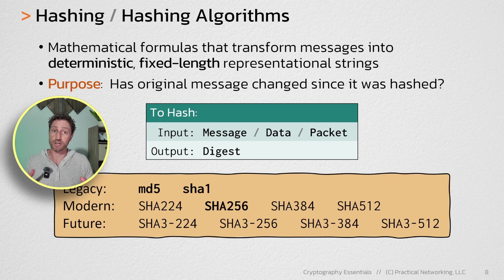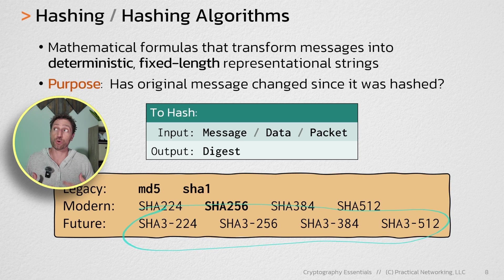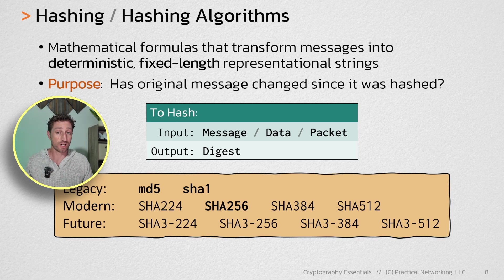And since that creation and approval process happened in public, the SHA-3 family is considered more secure and more trustworthy than the SHA-2 family. So in the future, you'll start seeing algorithms switch to the SHA-3 family. But for now, there's nothing insecure about the SHA-2 family.